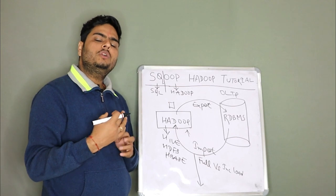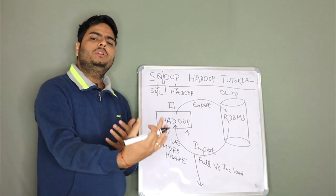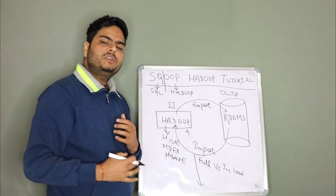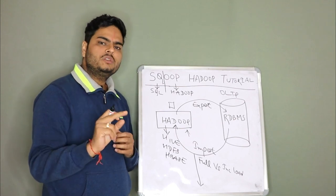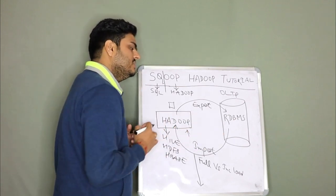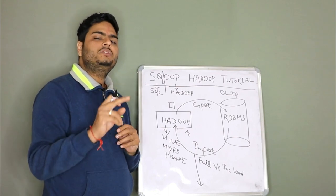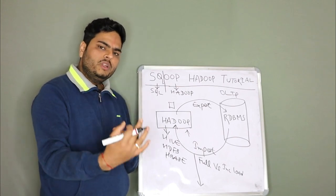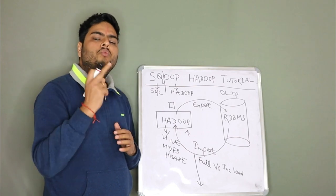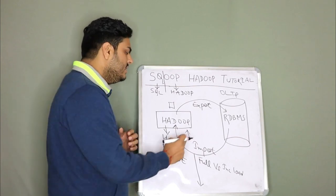At some times, we just want to continuously pull the data from RDBMS to Hadoop. Let us say job runs in every 24 hours. We pull the data from RDBMS. It will again run after 24 hours and pull the data for yesterday only.